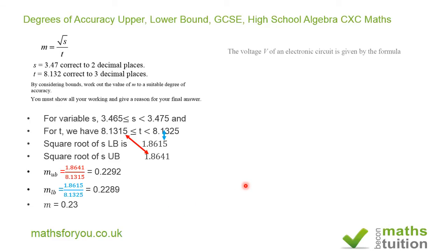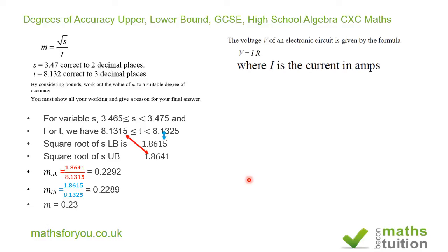I hope that makes sense. Now for the next one. The voltage V of an electronic circuit is given by the formula V equals I times R, where I is the current in amps and R is the resistance in ohms. We are given that V is 0.218 to 3 significant figures and R is 0.0126 to 3 significant figures.